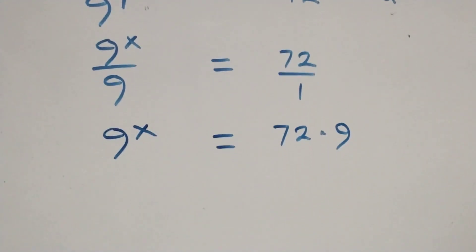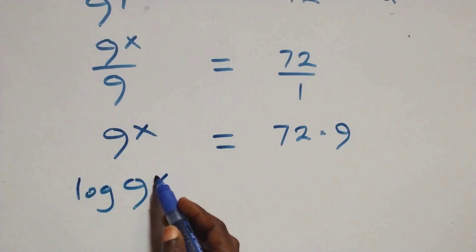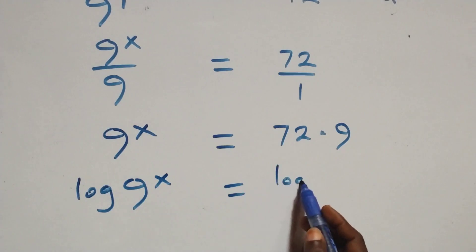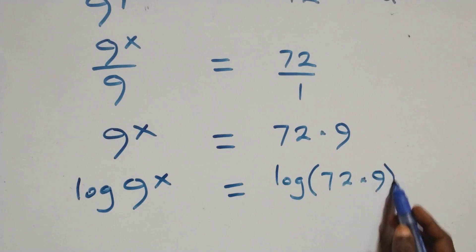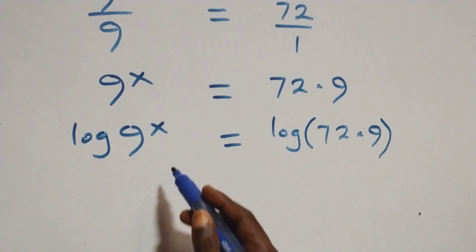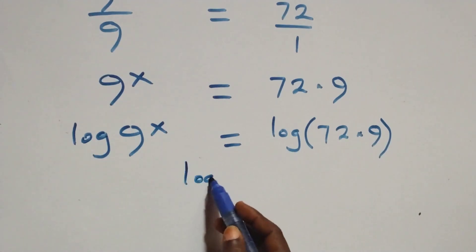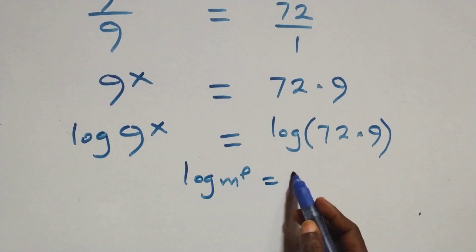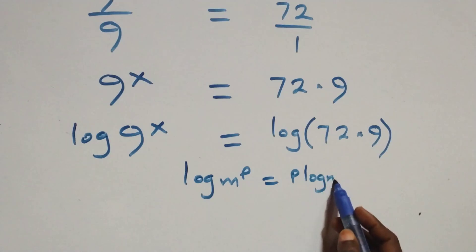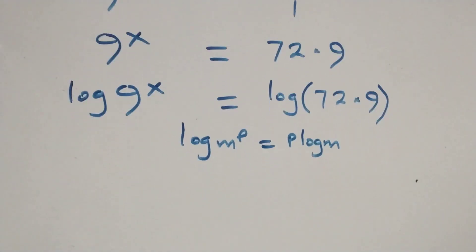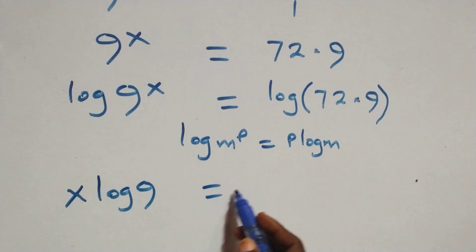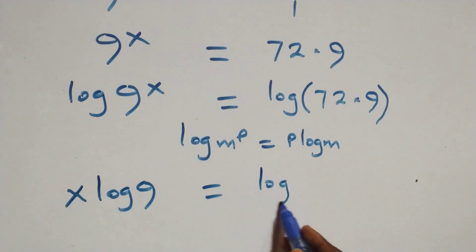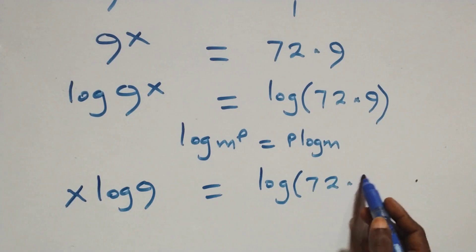From here we take the log on both sides. We have log of 9 raised to power x equals log of 72 times 9. Then we apply the power rule of logarithms: when we have log m raised to power p, this is the same thing as p times log m. So we have x log 9 equals log(72 times 9).